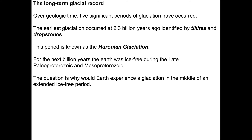When we look at the long-term glacial record of the Earth, we see five significant periods of glaciation. The earliest examples occurred 2.3 billion years ago, identified by tillites and dropstones — this is known as the Huronian glaciation. For the next billion years, the Earth was ice-free during the late Paleo-Proterozoic and Meso-Proterozoic. The question is: why would the Earth experience a glaciation in the middle of a long-term ice-free period?